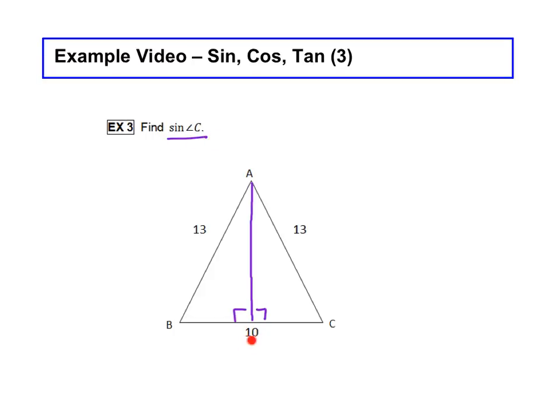See how the bottom is 10? With an isosceles triangle, if you drop an altitude down, it hits the midpoint of that base. A midpoint tells you that these two sides will be congruent, and if the whole thing was 10, that means this one is 5 and this one is 5.